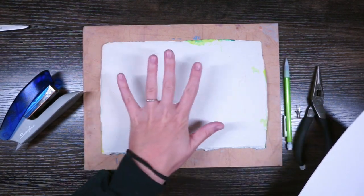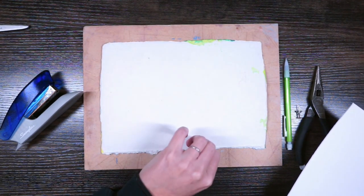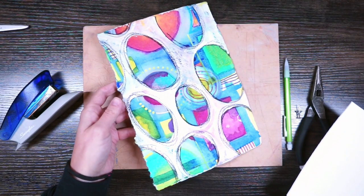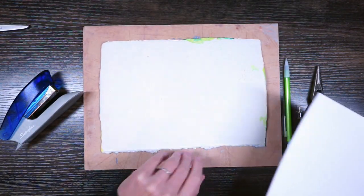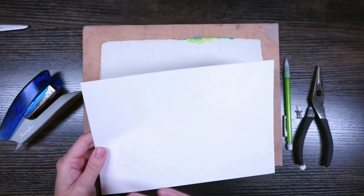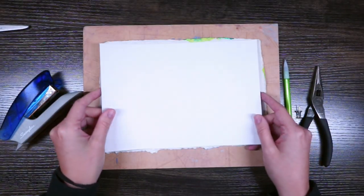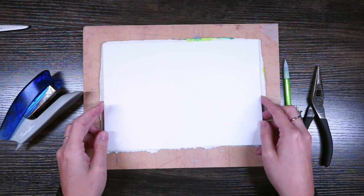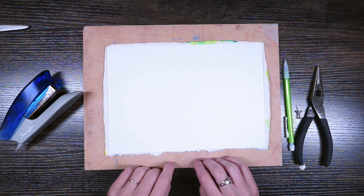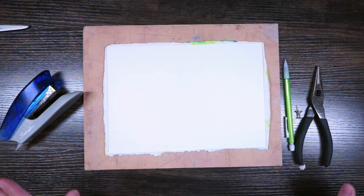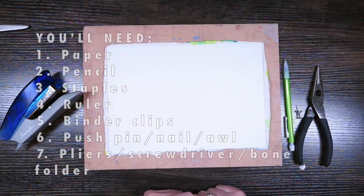Then I also have a sheet of paper that I painted that I'm going to use for my cover. You could just use a straight sheet of regular paper. I cut this down so that it would fit inside of the paper that I wanted to use for the cover.